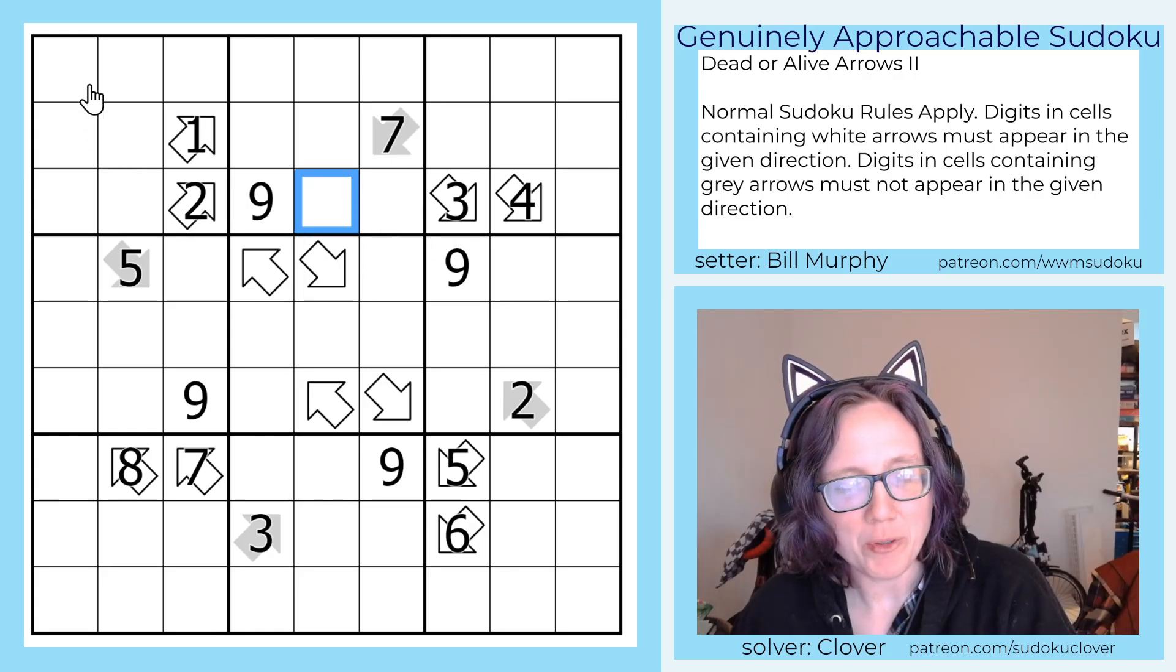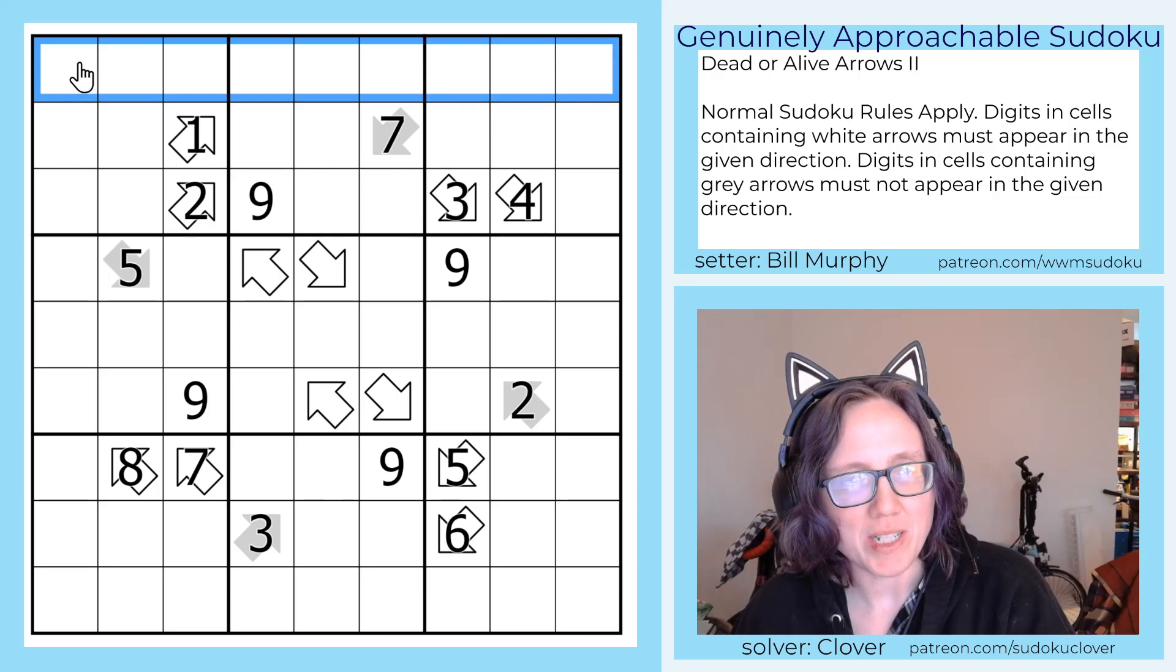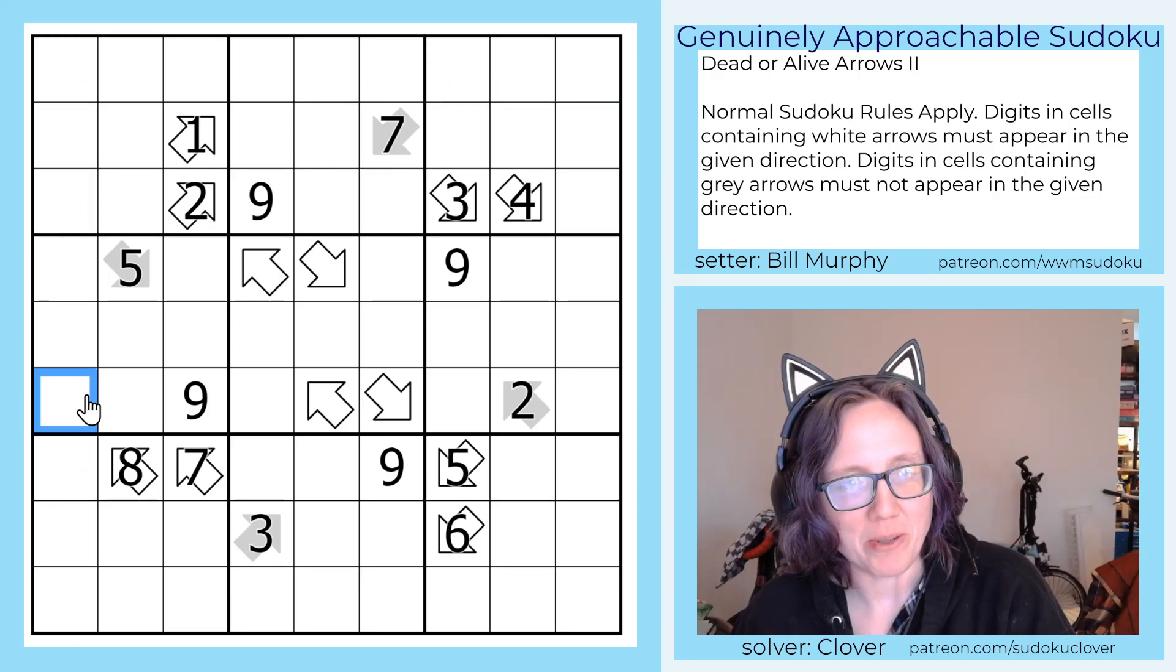We have normal Sudoku rules, so we're placing the digits 1 through 9, once each, in each row, each column, and each outlined 3x3 region.